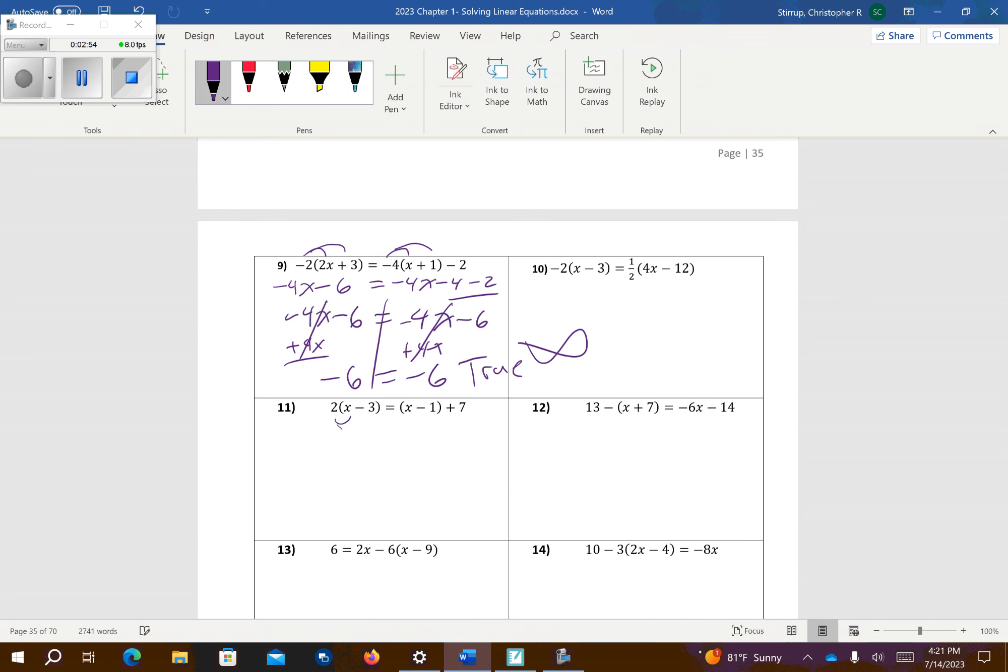Number 11, distribute the 2. There's a 1 out front here, so you distribute that over. So I get 2x minus 6 equals x minus 1 plus 7. Combine those like terms. And then I'm going to go ahead and subtract x. So I'm going to get x minus 6 equals 6. Add 6 to both sides. Squeeze it in there. x equals 12.